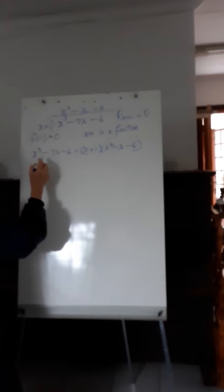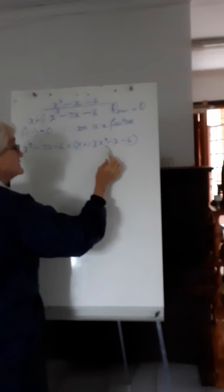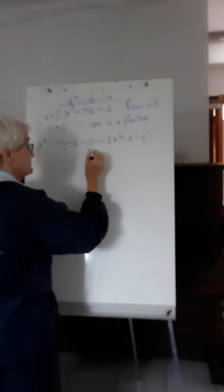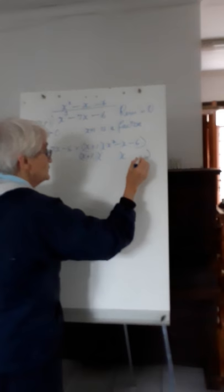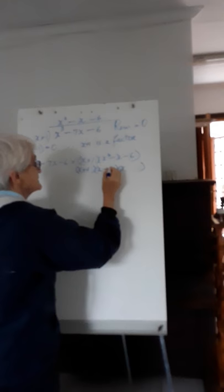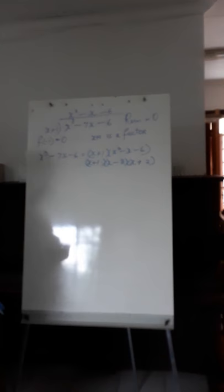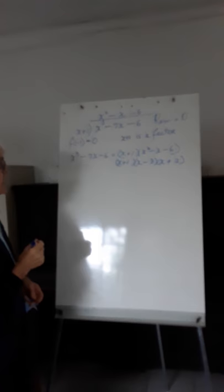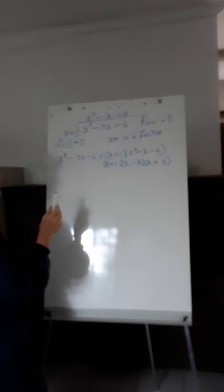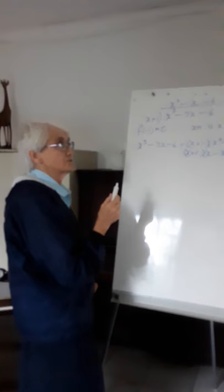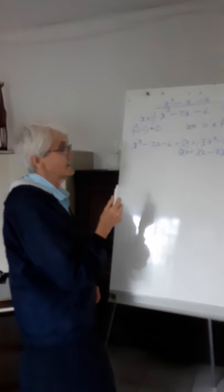These are two factors of x cubed minus 7x minus 6. This is a linear factor and this is a quadratic one. We will now get three linear factors: x plus 1, and we will then factorize our binomial, which gives x plus 1, x minus 3, and x plus 2. Our cubic expression x cubed minus 7x minus 6 has been factorized into three linear factors. When you have a quadratic expression, you factorize it into two linear factors. Cubic expression factorized into three linear factors: x plus 1 into x minus 3 into x plus 2.